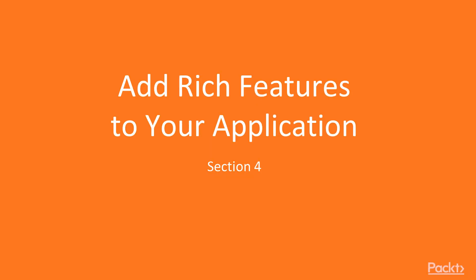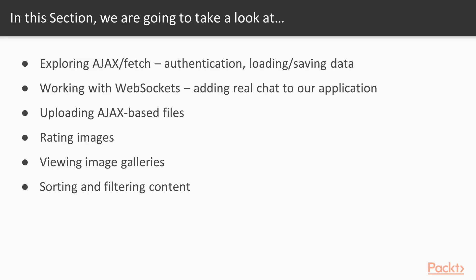Hello and welcome to the fourth section of this tutorial: add rich features to your application. In this section, we will first explore Ajax and Fetch API for authentication and saving data. Then we will work with WebSockets for adding real chat to our application. We will also upload Ajax-based files, and we will be rating images and viewing image galleries. Then we will be sorting and filtering content.